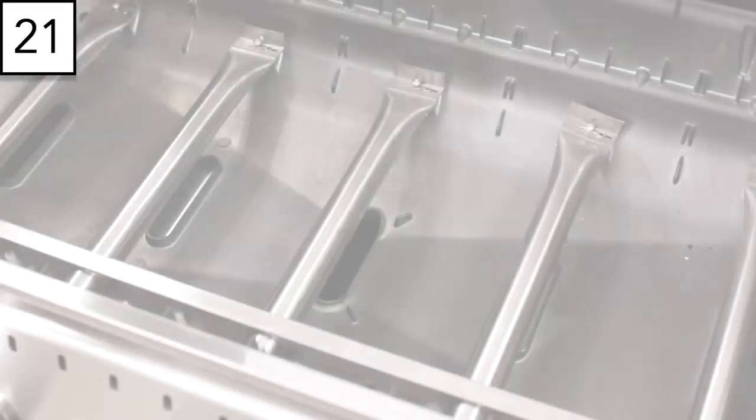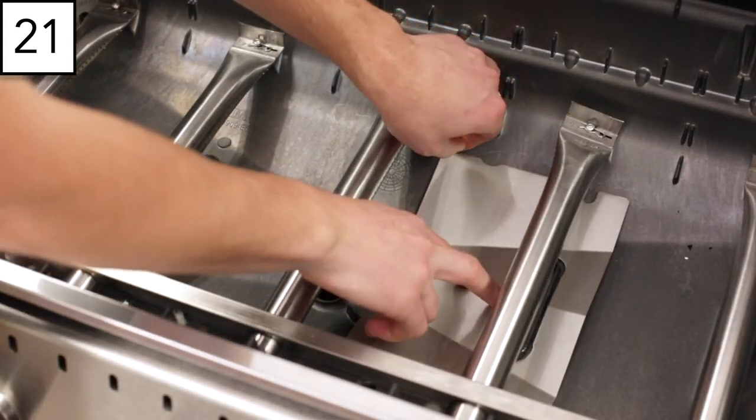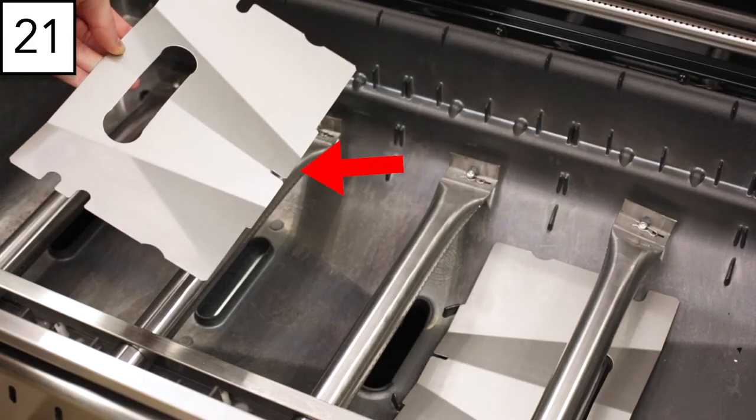Step 21. Install the two center grease shields in the bottom of the cook box. Note the center shields do not have a raised lip.